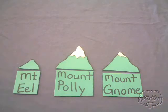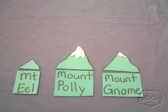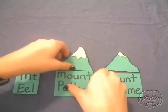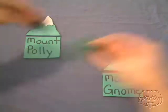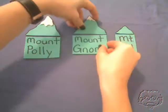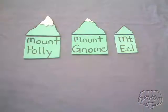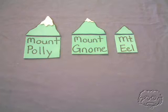When we look at mountain ranges, usually the mountains aren't in any particular order. But when we have a polynomial, we like to put our terms in order from the highest degree term to the lowest degree term. That would be like putting our mountain range in order from the tallest mountain to the shortest mountain. If we were to order these mountains, first we'd have Mount Polly, because that's our highest mountain. Last would be Mount Eel, because that's the shortest. In between, we'd have Mount Gnome. So if we ordered our mountains like we order the terms in a polynomial, then we'd have a polynomial mountain range.